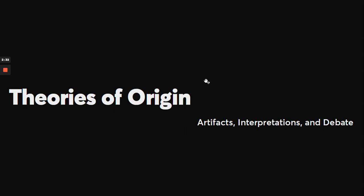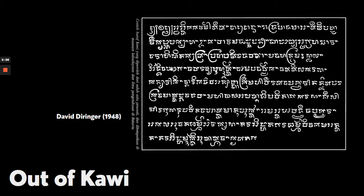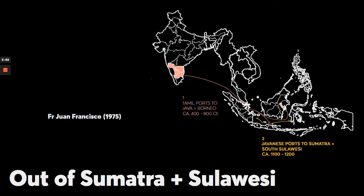Baybayin has a lot of theories of origin. A lot of them are quite disputed due to scarcity of evidence, and also because the materials written are not exactly permanent, so we get a lot of gaps in history. The more acceptable theories posted here are: one out of Kawi, and another out of Sumatra and Sulawesi. Later, you will get to see the evidence of the relatedness.